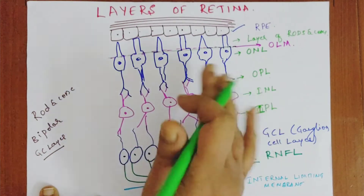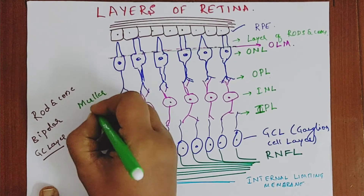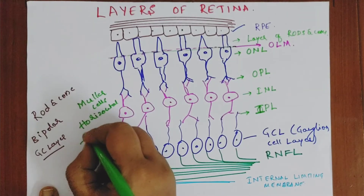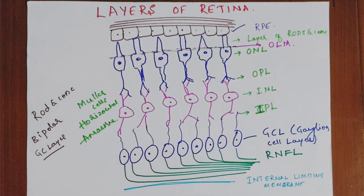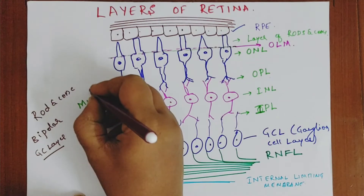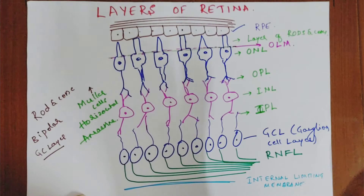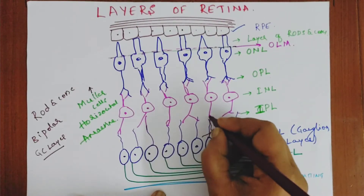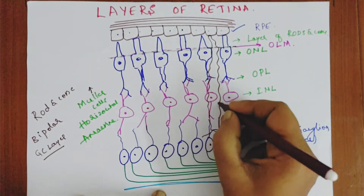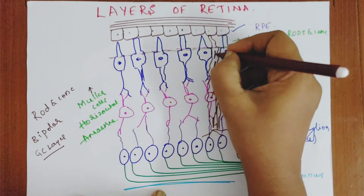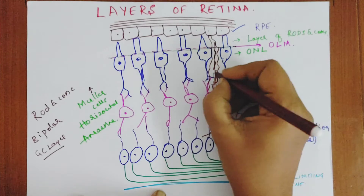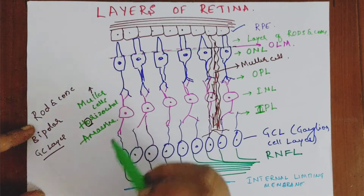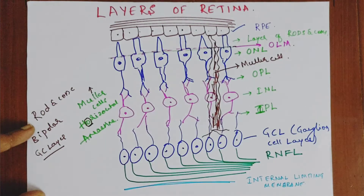Apart from all these cells, we have three more other types of cells: Müller cells, horizontal cells, and amacrine cells. The Müller cell is the most gigantic cell — it almost covers all the layers of the retina. You can represent it spanning nearly the entire retinal thickness.